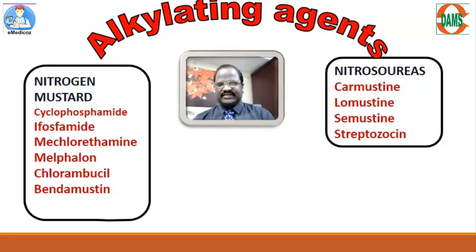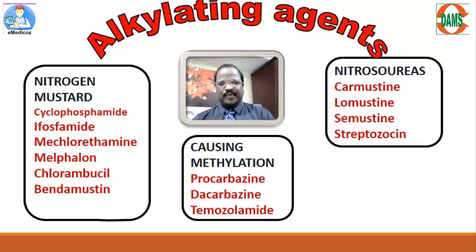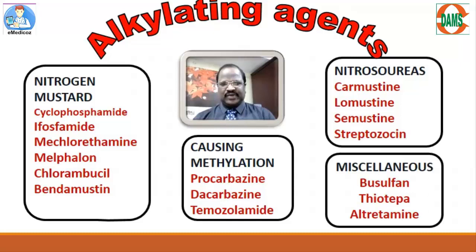Another group of alkylating agents causing methylation includes procarbazine, dacarbazine, and temozolomide. Another group called miscellaneous includes busulfan, thiotepa, and altretamine. All these are examples of alkylating agents.